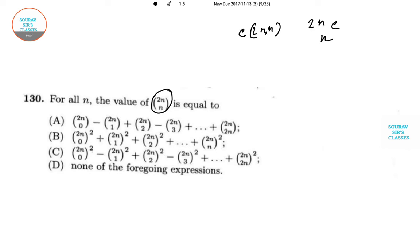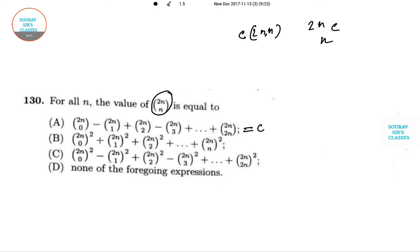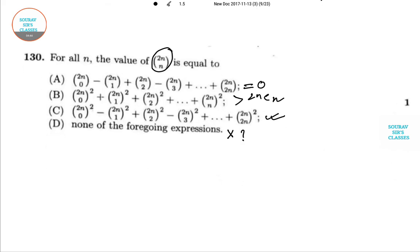Remember that the first expression is obviously equal to 0, that is not 2nCn. The expression in option B is obviously greater than 2nCn. Option D we are not focusing right now.